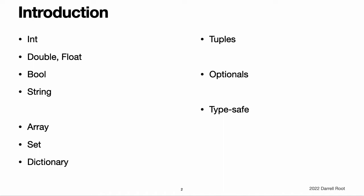Swift also provides powerful versions of three primary collection types: Array, Set, and Dictionary, as described in Collection Types. Like C, Swift uses variables to store and refer to values by an identifying name. Swift also makes extensive use of variables whose values cannot be changed. These are known as constants, and are much more powerful than constants in C. In addition to familiar types, Swift introduces advanced types not found in Objective-C, such as tuples.